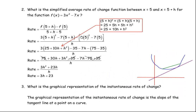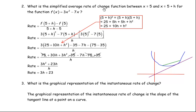On to question number 2: what's the simplified average rate of change for the function between where x is 5 and 5 plus h? Instead of specific values like 1 and 3, it uses 5 and 5 plus h. So h is just the difference between these two x coordinates. For example, if h was 1, this would go from 5 to 6. So h is just the horizontal distance between the two x coordinates for the secant points.